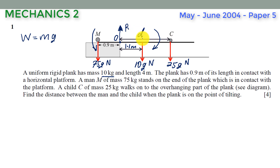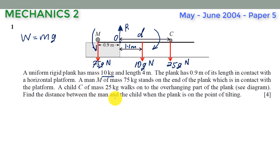We call the distance from point O to the child d, since we don't yet know its value. Once we find d, we add it to 0.9 meters to get the full distance from man M to child C — the distance we have been asked to calculate. Now let's take moments about point O.